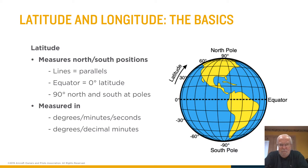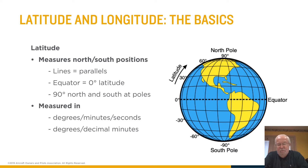For now, this is the basic concept. Latitude lines are parallel — parallel because they're the same distance apart from each other. They go from zero at the equator all the way 90 degrees to the north.